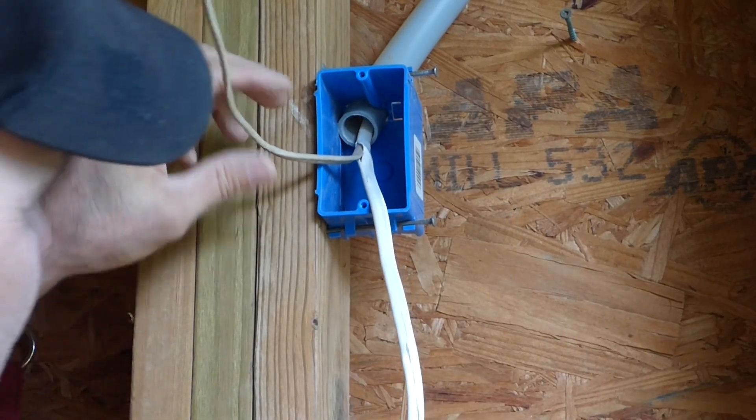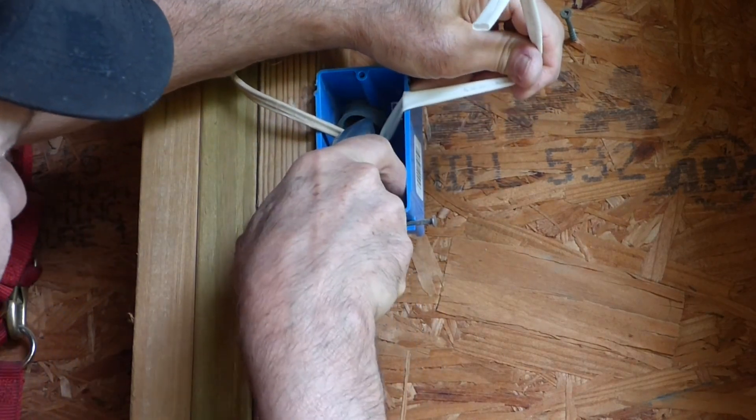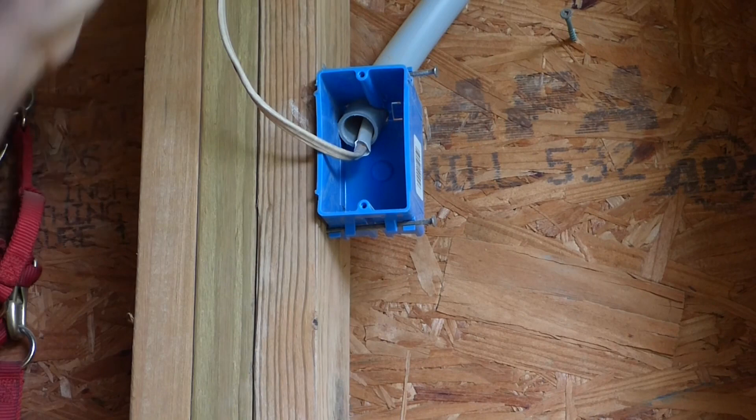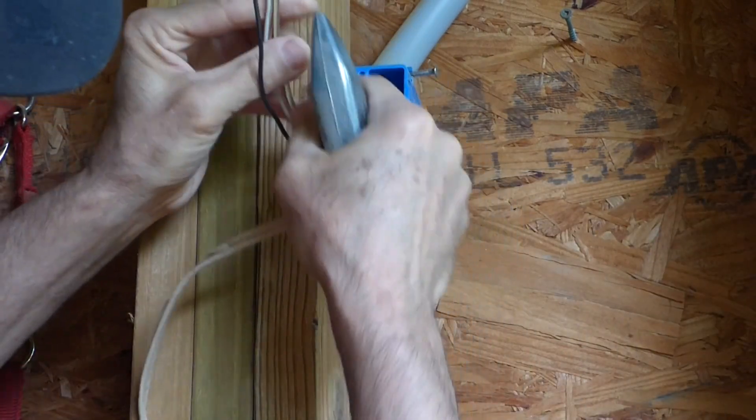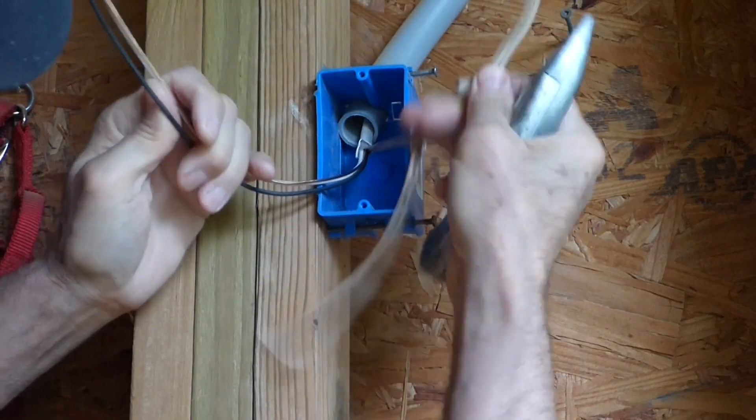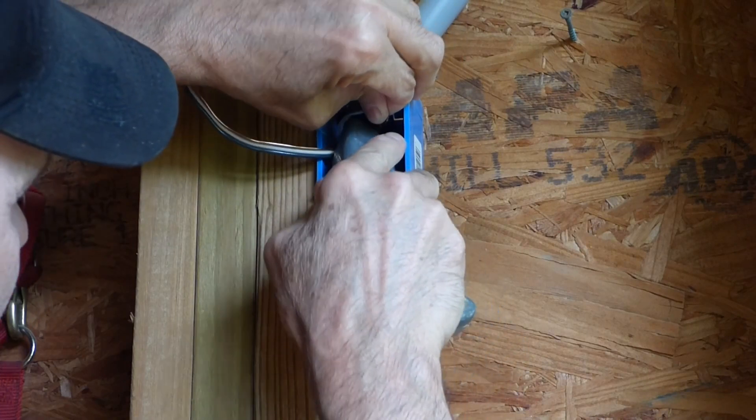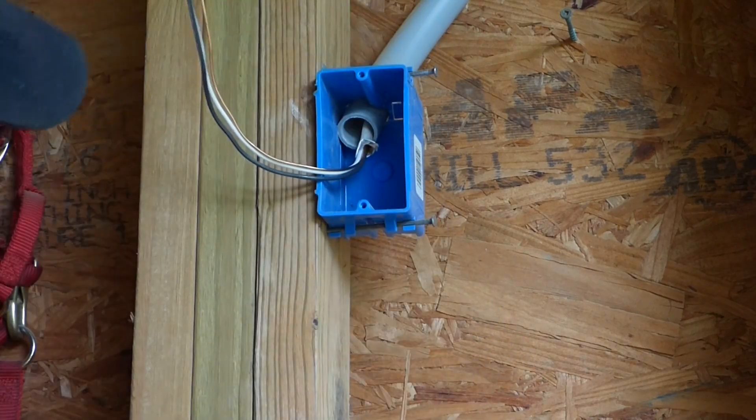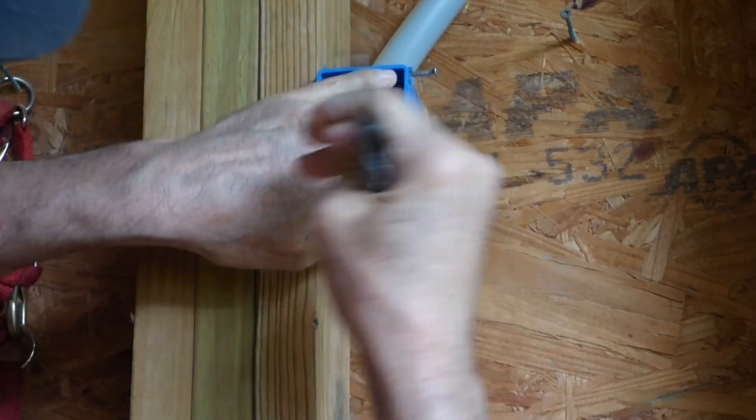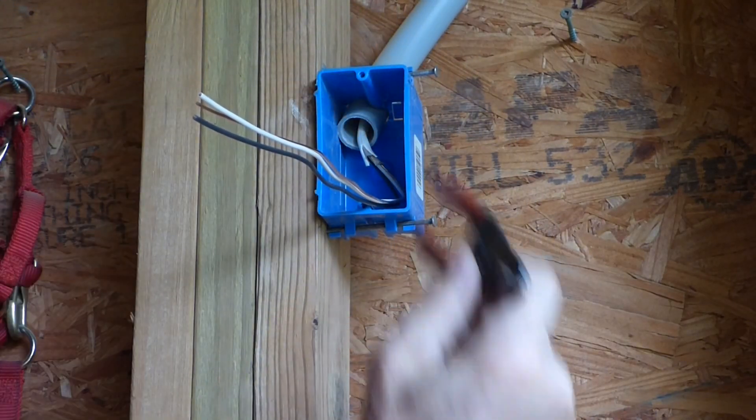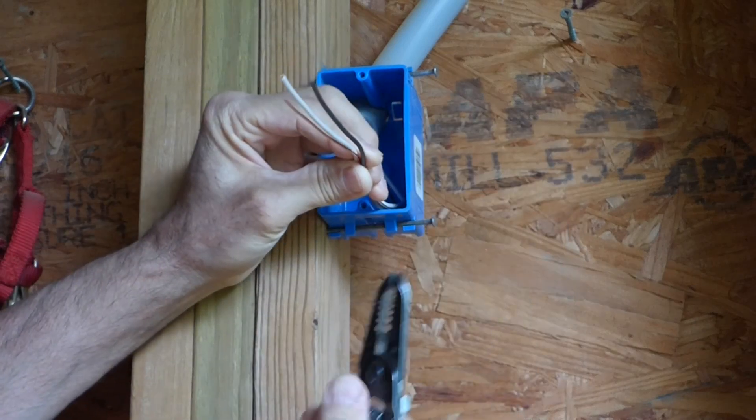That's good there. I'll cut off the extra. Pull the paper back, tear that off. I want to leave about six inches of wire. This is about the length of my pliers here. So we'll cut that off.